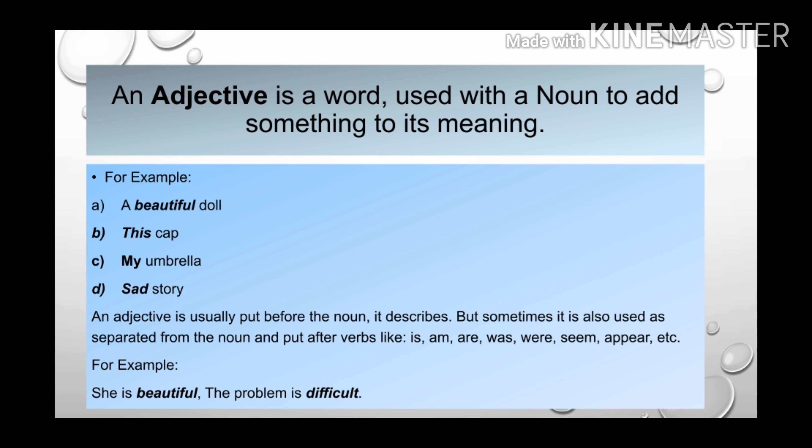An adjective is a word used with a noun to add something to its meaning. It means that an adjective will give you more information about a noun or it describes a noun. To understand this better, let's take a few examples. A beautiful doll.